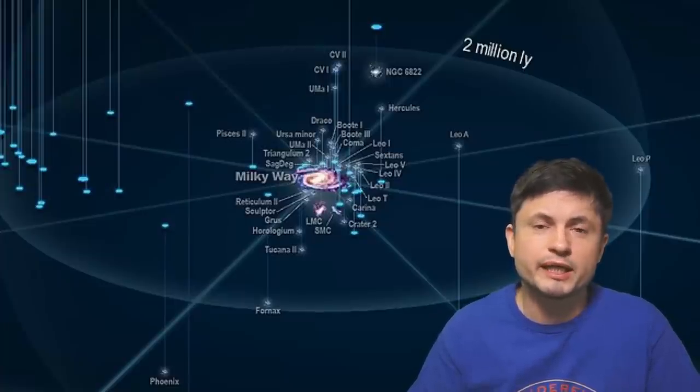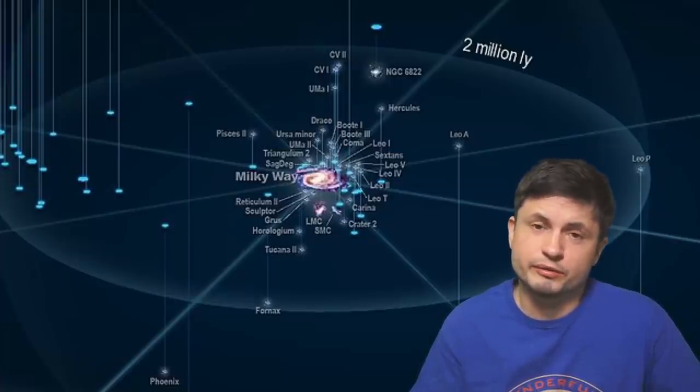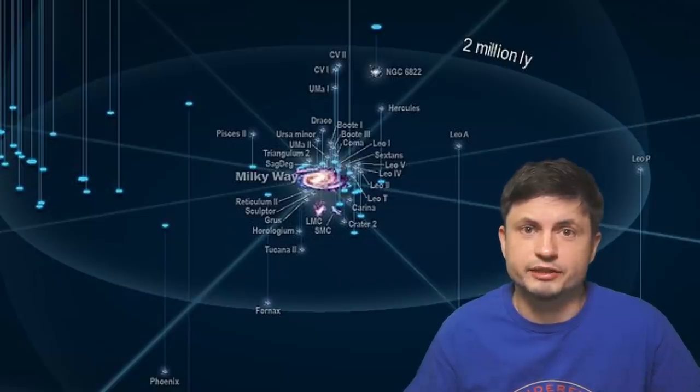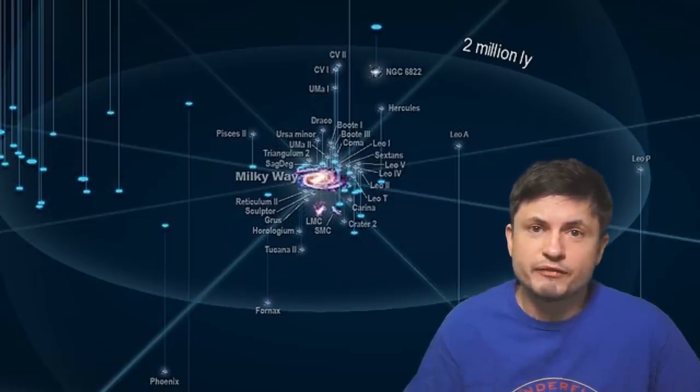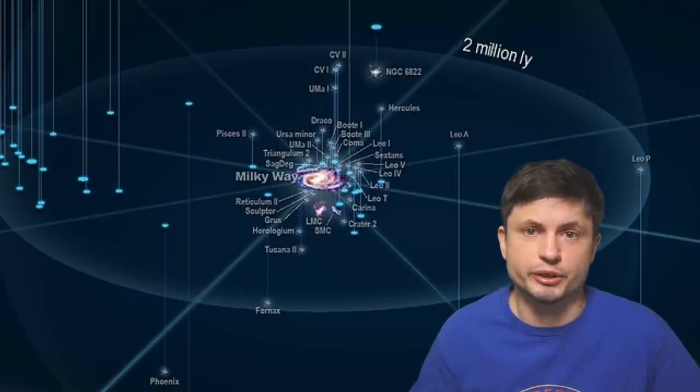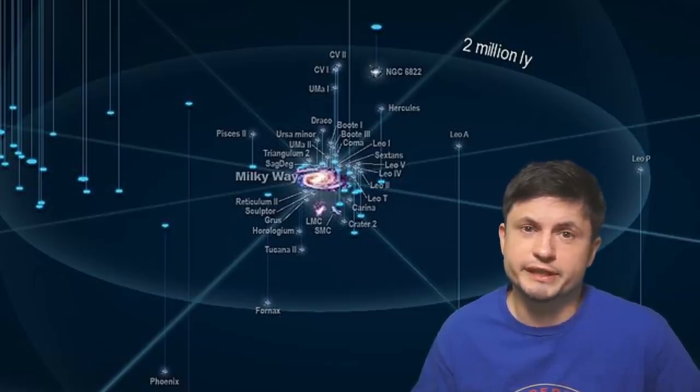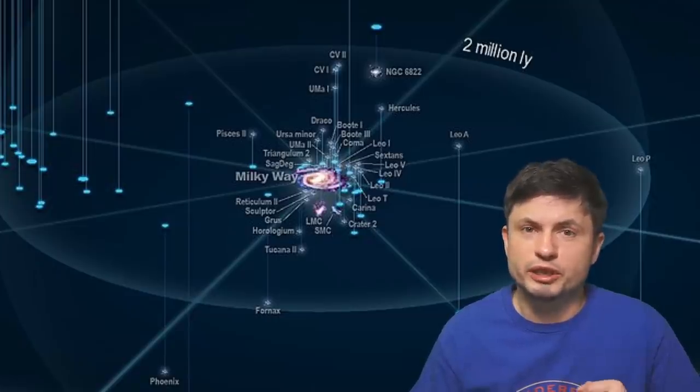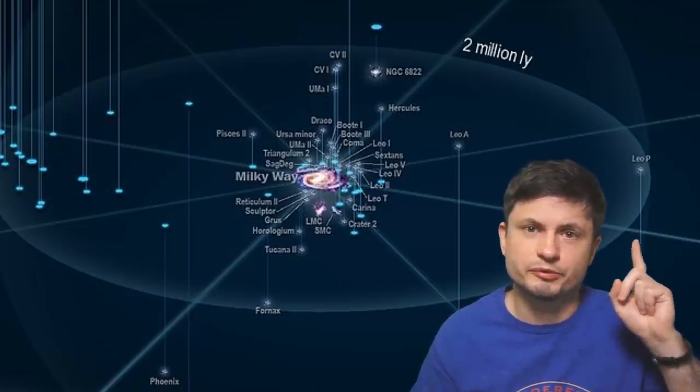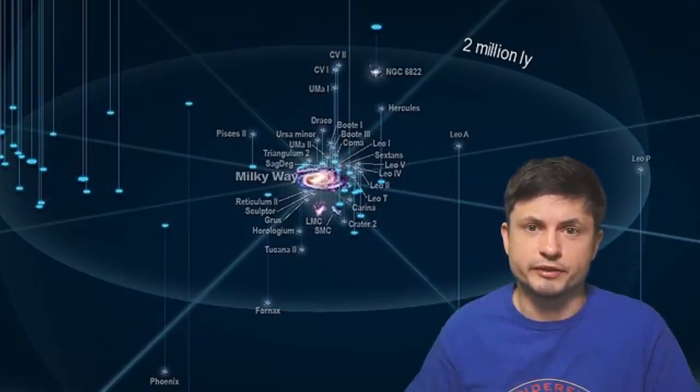And when I say close to the Milky Way, I mean it's in the so-called local group. There are roughly around 60 different dwarf galaxies very close to the Milky Way and many of them seem to be gravitationally attached to it. Although in one of the previous videos we also discussed some of the unusual discoveries about all of these galaxies together.